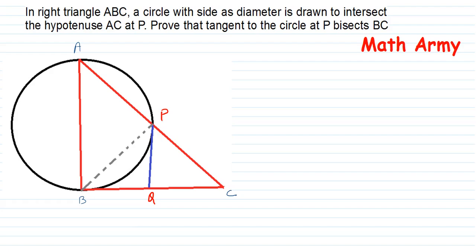One basic fact is that whenever a triangle is drawn in a semicircle, the angle of that triangle is going to be 90 degrees. So here, angle APB is 90 degrees because AB is a diameter — a triangle drawn in a semicircle always gives a 90 degree angle. Now, if that angle is 90 degrees, since AC is a straight line with angle 180 degrees, we get 90 plus X plus Y equals 180, so X plus Y is also 90 degrees.